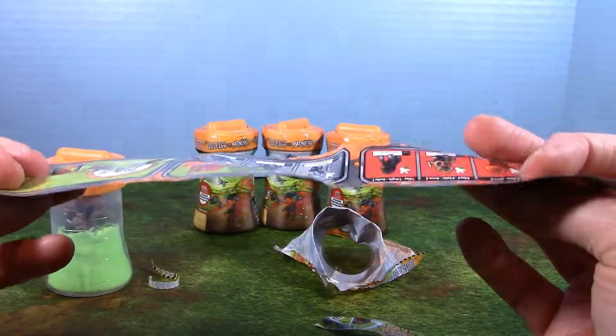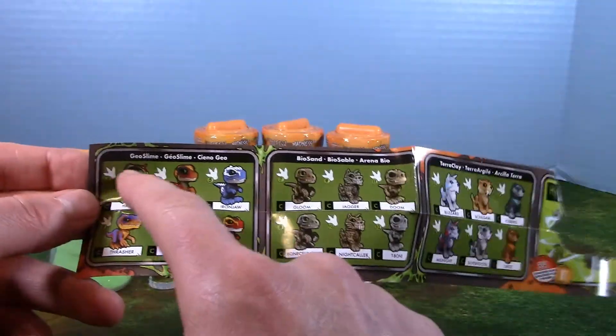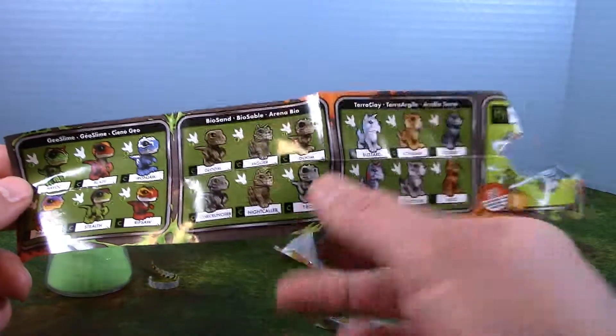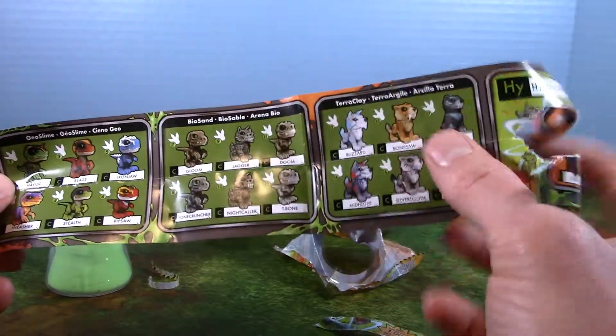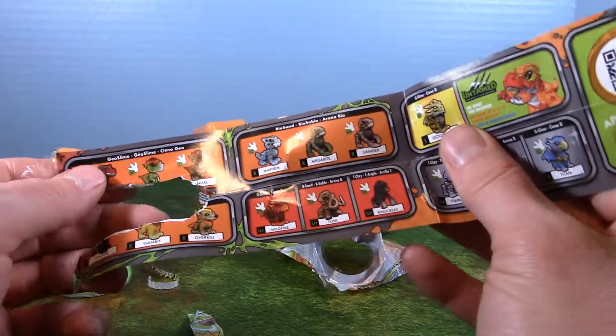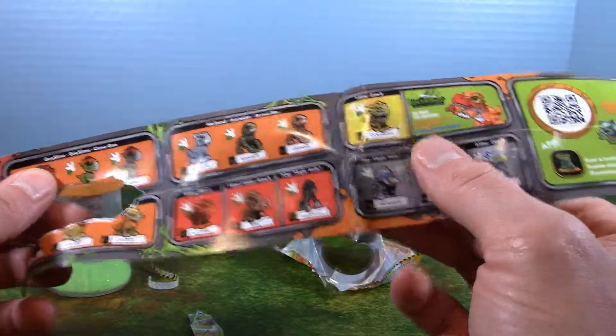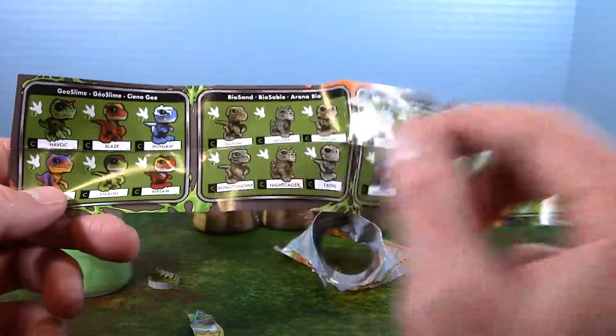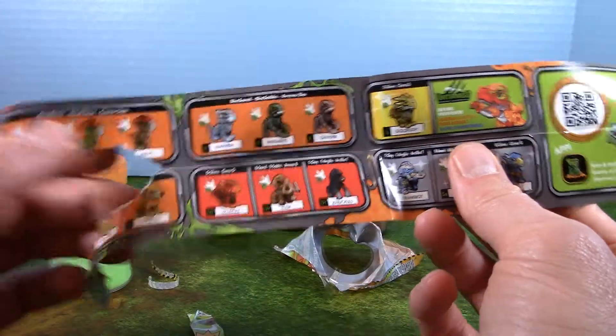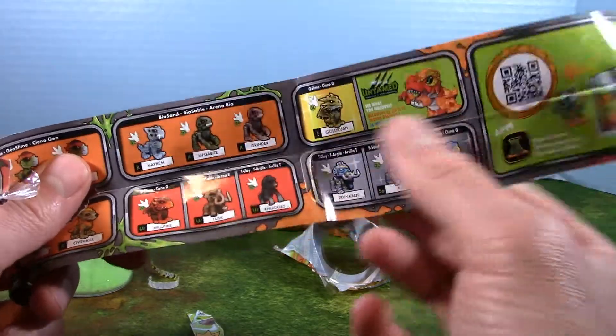There's all sorts of little critters. Geoslime, Biosand, pteroclay. This looks like a little wolf. All sorts of critters. On the other side, we have a lot more of the little animals. These might be the rare ones. Some of these look the same, but some of them different.